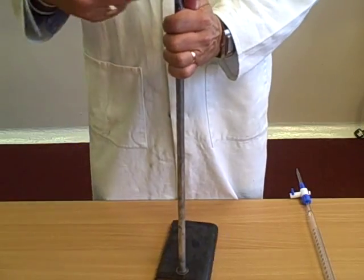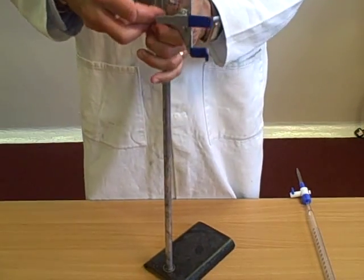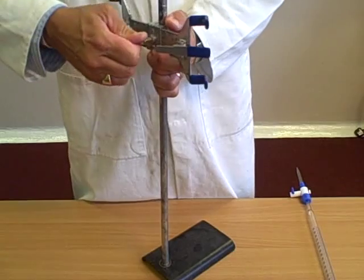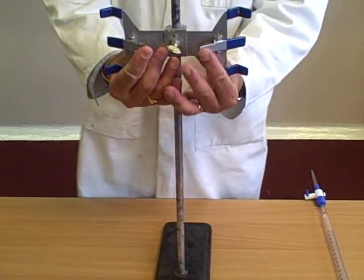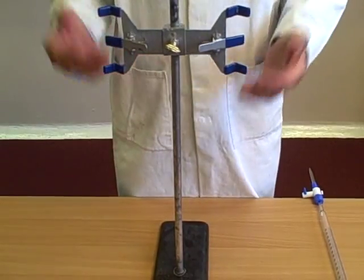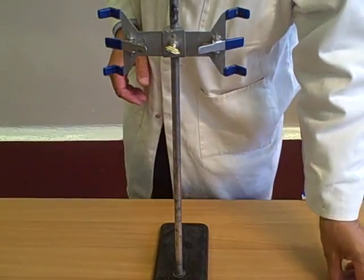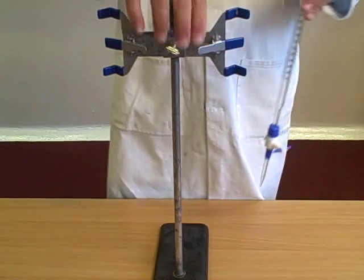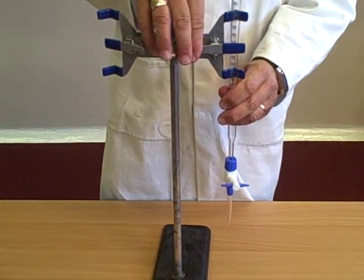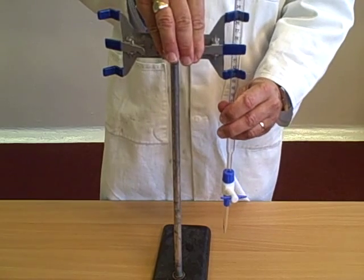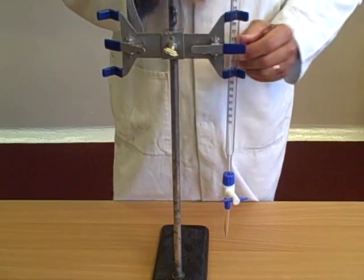So the first thing that you need is a retort stand and you put on a clamp. Now this is a double clamp, two pins here and here, so it can hold two objects. All we're going to use is one burette. The burette sits in there like that. So you open the clamp, you put that in there, the burette is held.